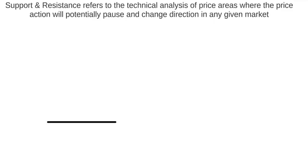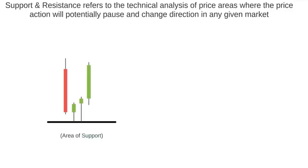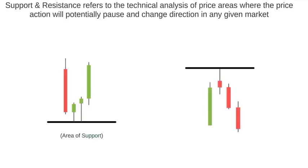If there is a price area below the current price action that has the potential to stop the price falling further and change its direction, we call this support. If there is a price area above the current price action that has the potential to stop the price rising further and change its direction, we call this resistance.